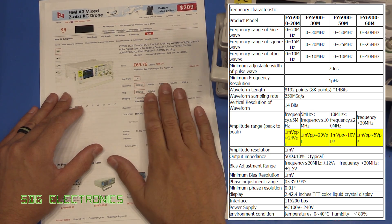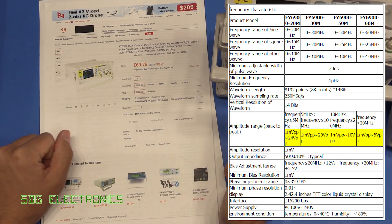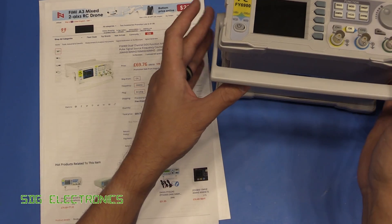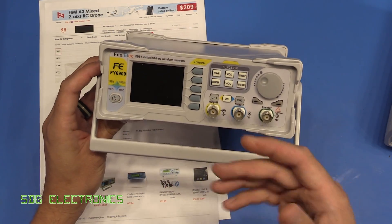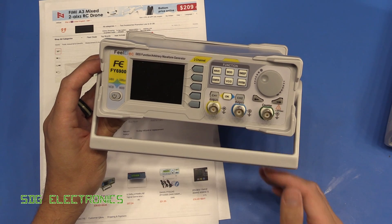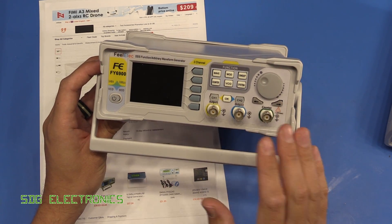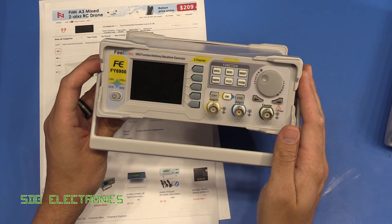I'll put links down to the Banggood listing in the description below. What we'll do first is have a look inside and see what the electronics looks like, then we'll give it a test afterwards because I want to check that the power supply is all safe first.